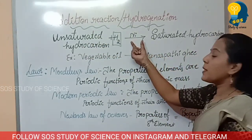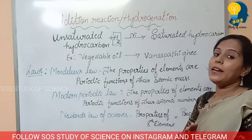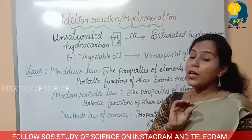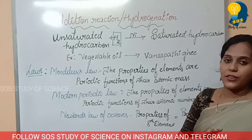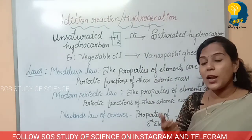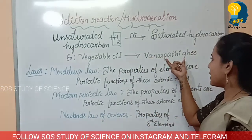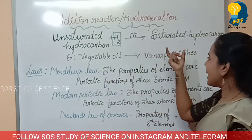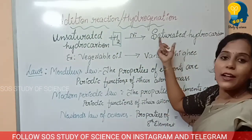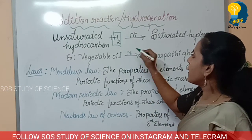Unsaturated hydrocarbon plus hydrogen, in the presence of nickel, gives saturated hydrocarbon. Write it this way and you will get complete marks. The industrial use of hydrogenation is the conversion of vegetable oil into vanaspati ghee. Vegetable oil is unsaturated; vanaspati ghee is saturated. Nickel is used as a catalyst.